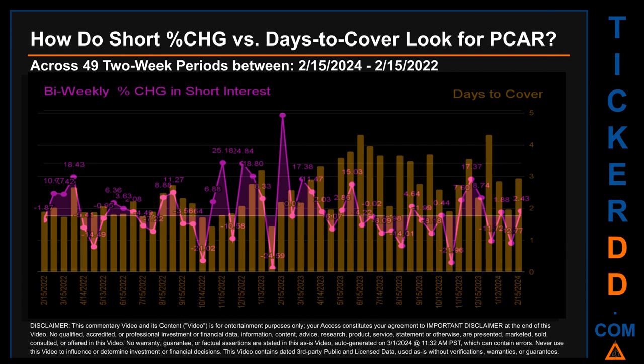Across those 49 two-week snapshots, the average percentage change of short interest was about 2.07%. The largest percentage increase in short interest was 47.55%, occurring once on the February 15, 2023 settlement date. The largest percentage decrease was minus 24.59%, occurring once on the January 31, 2023 settlement date. The average days to cover was about 2.55. The biggest days to cover was 4.31, happening twice, with the latest settlement date being December 29, 2023.